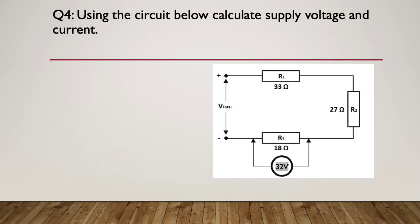Question four: using the circuit below, calculate the supply voltage and the current. So they've given us 33 ohms, 27 ohms, and the voltage across the 18 ohm resistor at 32 volts. So pause here and see if you can answer the question. Here's your hint: I need to calculate the current first, but the current where? So think about where you can actually work out the current.